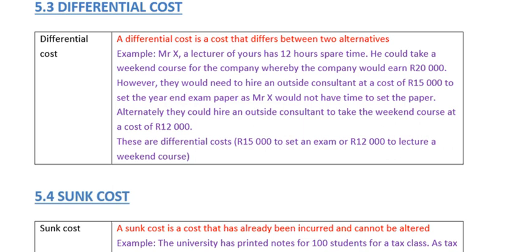Now, differential costs. A differential cost is a cost that differs between two situations. In the previous discussion on opportunity cost, we would get 20,000 rand. Alternatively, we would have to get somebody to set a paper at 15,000 rand — it would be better to earn the extra 5,000 rand. But with differential costs, income is not involved; there are two costs that we need to compare, because a differential cost is a cost that differs between two alternatives.